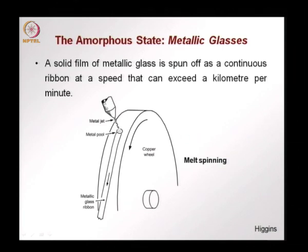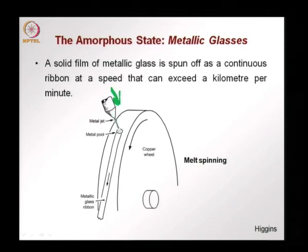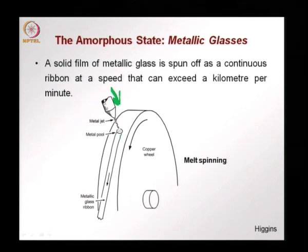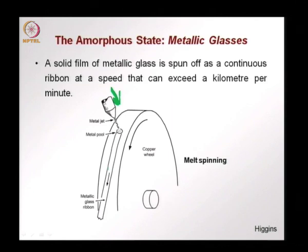In melt spinning, you have a copper wheel that is spinning and kept very cold. A jet of metal is shot impinging against this copper wheel. As it spins at high speed and the metal jet hits, it cools down and forms a metal glass ribbon. The solid film of metal glass is spun off as a continuous ribbon at a speed that can exceed a kilometer per minute.